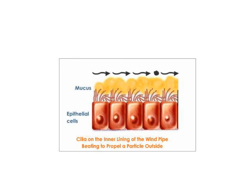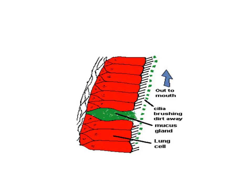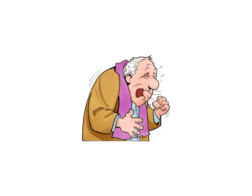Pretty well any material other than the gases of the inhaled air will get caught in the mucus lining these structures. The cilia are in constant motion, beating the debris-laden mucus upward toward the pharynx. When this material is detected at the back of the mouth, it is either swallowed or coughed out.